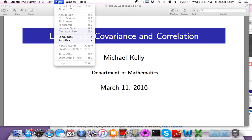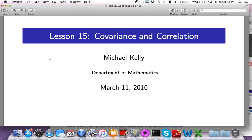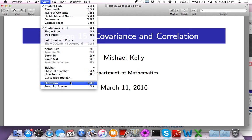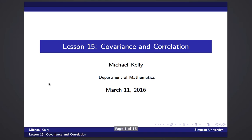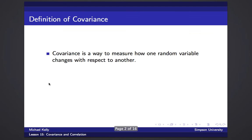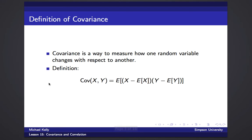Welcome to lesson 15. Today we're going to talk about covariance and correlation. Covariance tells us how to measure one random variable against another. If we have two random variables X and Y and we see a change in X, does that imply anything about the outcome of Y? Formally defined, the covariance between X and Y is the expected value of (X minus its mean) times (Y minus its mean).